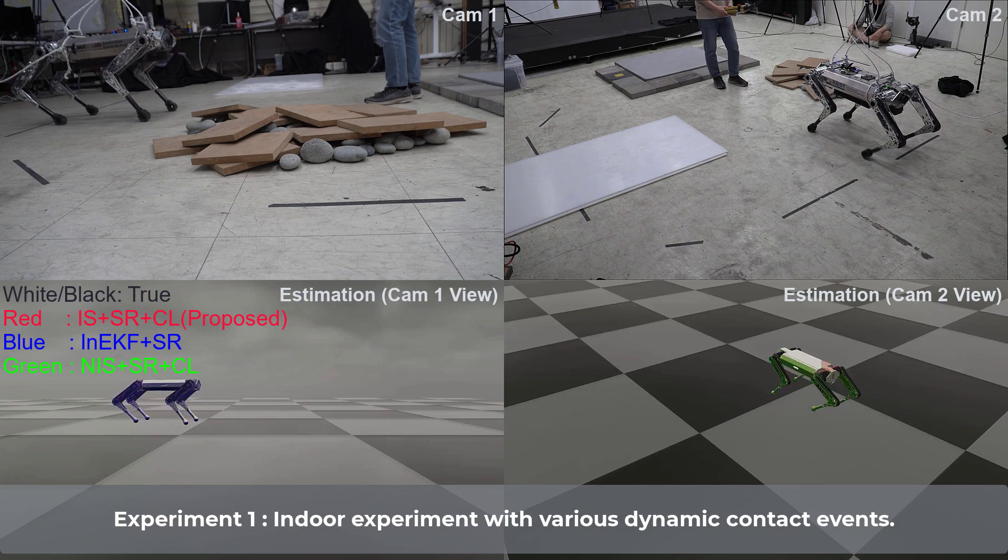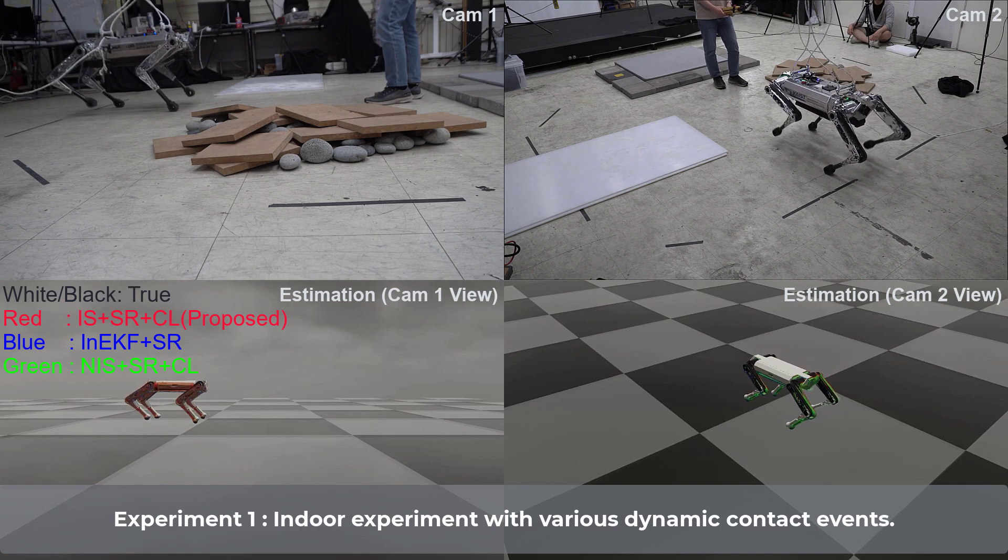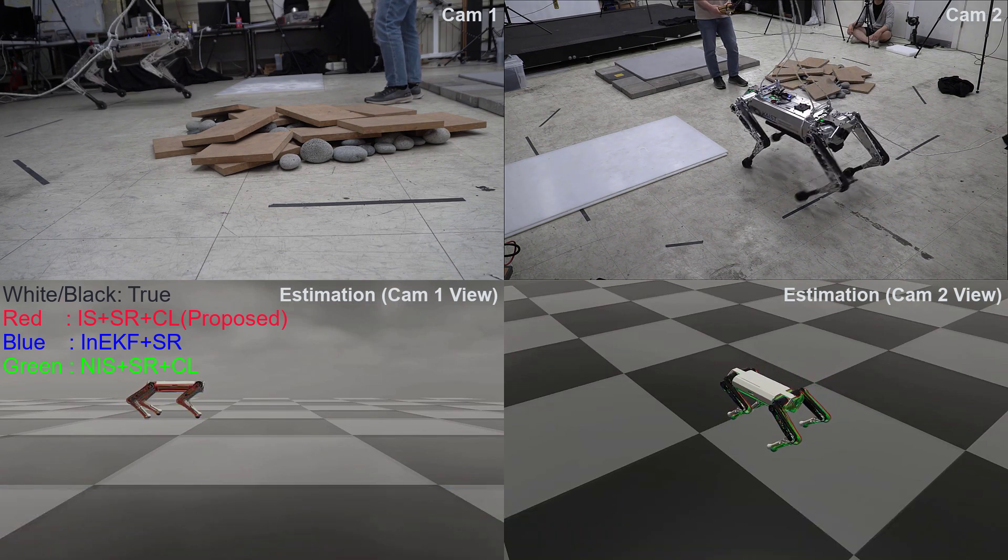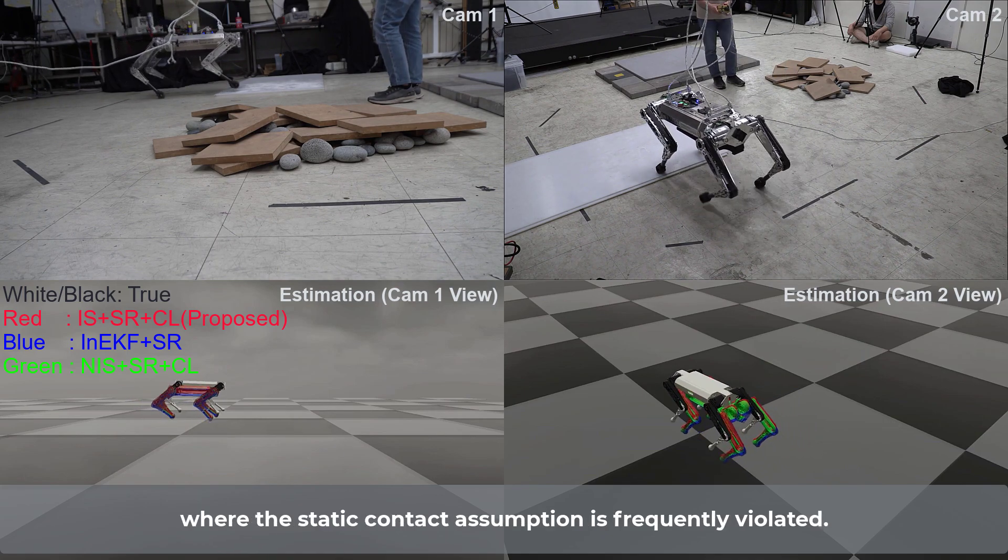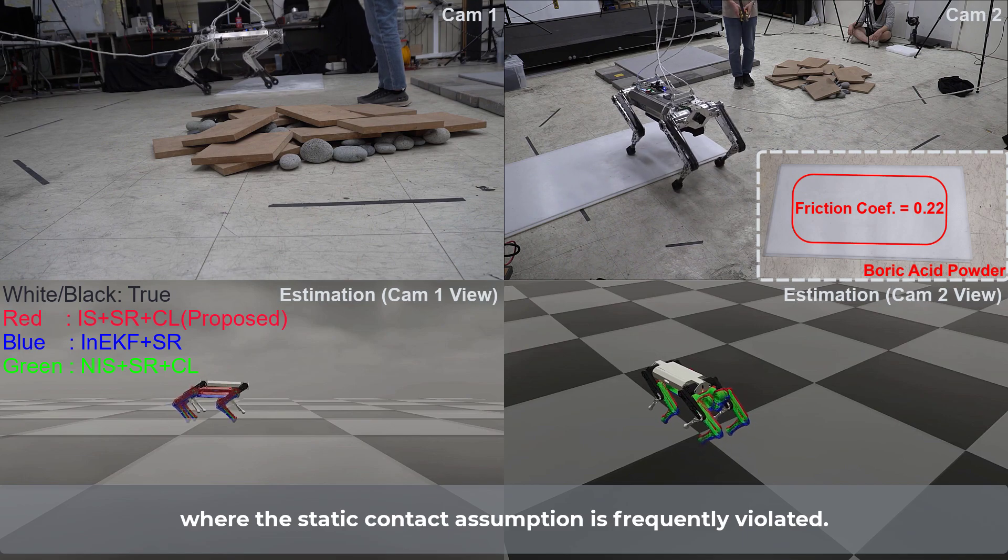Experiment 1. Indoor experiment with various dynamic contact events. In this experiment, the robot walks in an extreme environment where the static contact assumption is frequently violated.